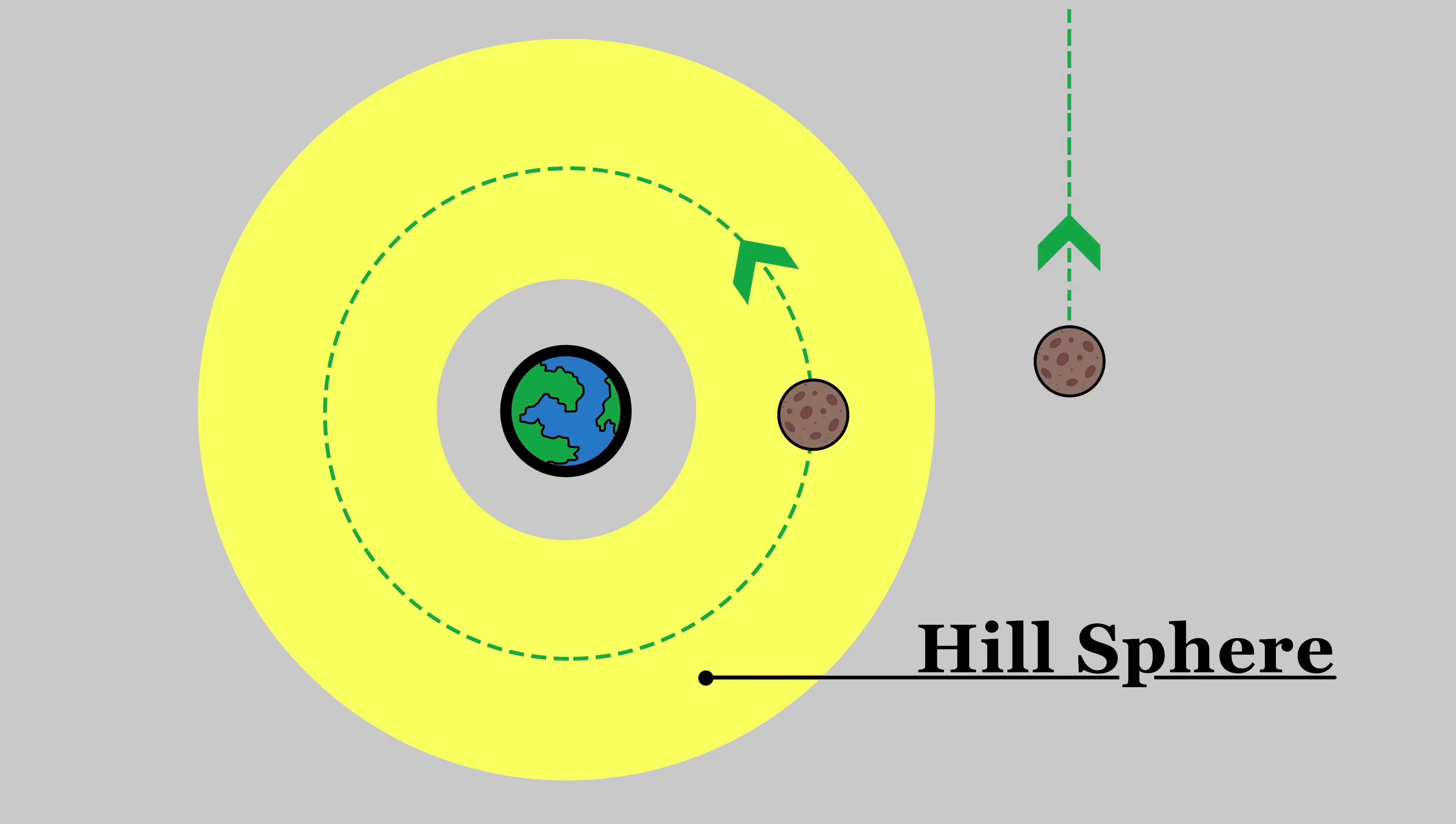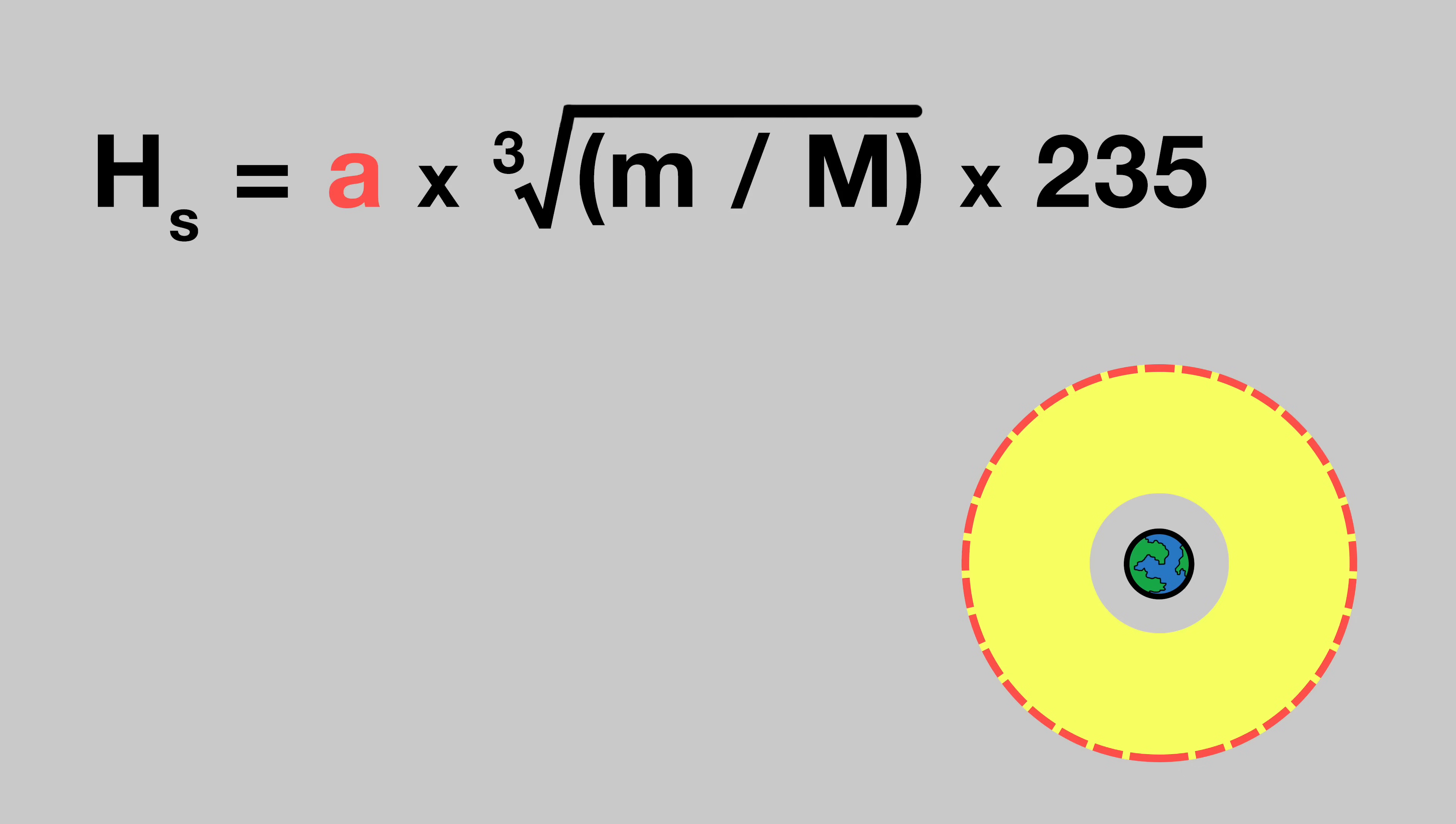Anyways, planets, like all astronomical objects, are encased in a sort of gravitational bubble we call a hill sphere. Any object inside the planet's hill sphere will be gravitationally bound to that planet. So by definition satellites must be placed inside this bubble, the outer limit of which is given by the equation A, the semi-major axis of the planet's orbit in AU, times the cube root of the mass of the planet in Earth masses, divided by the mass of the star in solar masses, multiply by 235. Plugging the relevant numbers in gets me a value of roughly 269.